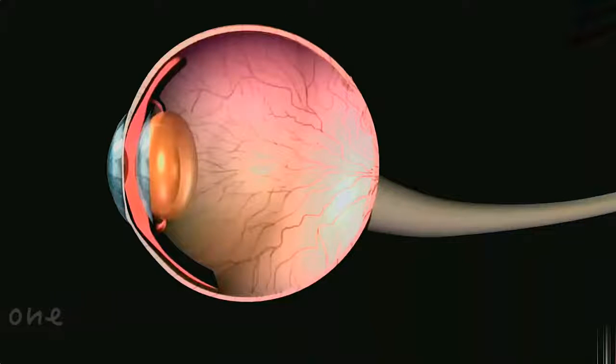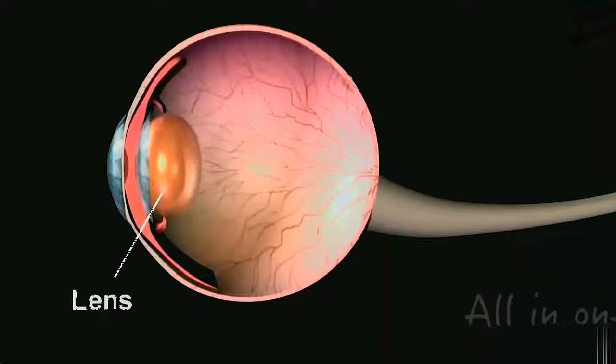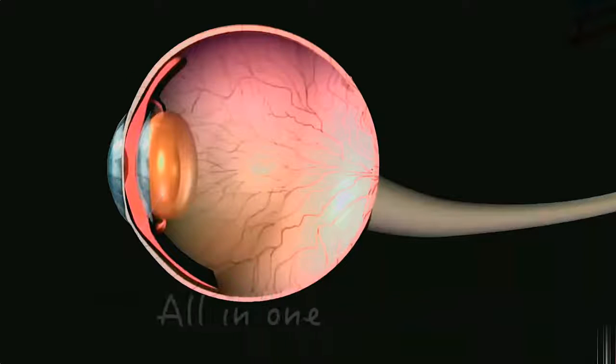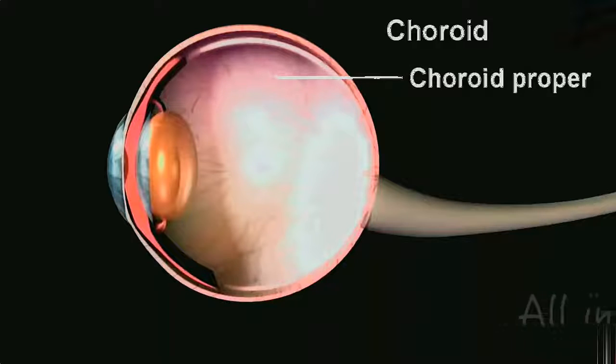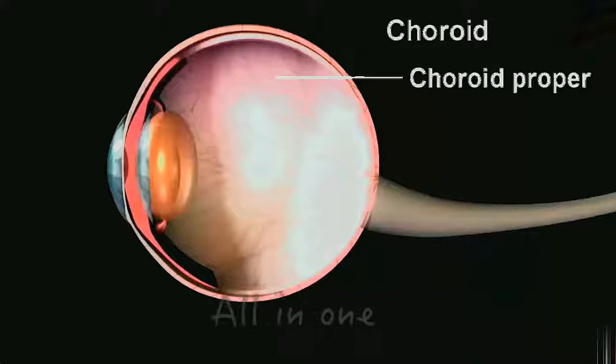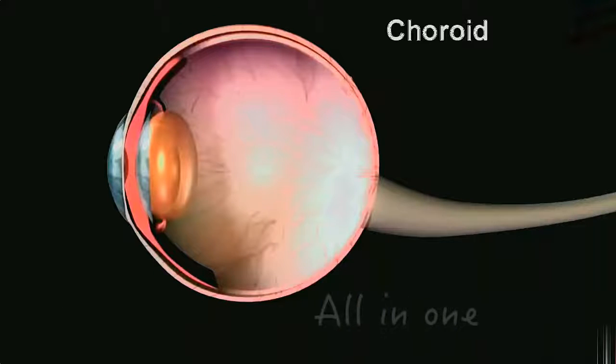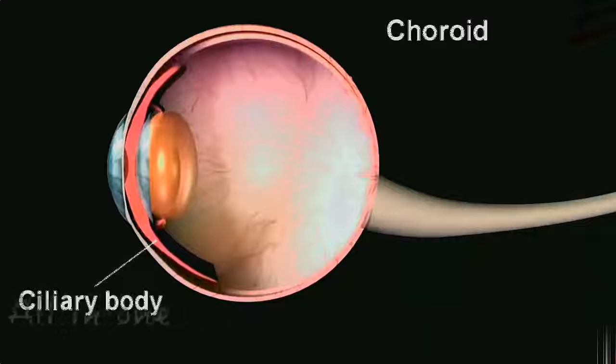There is also a crystalline lens which is one of the main parts of the human eye. The second layer is called the choroid. It consists of three different zones. The first zone is called the choroid proper and it carries nourishment to the tissues of the eye.